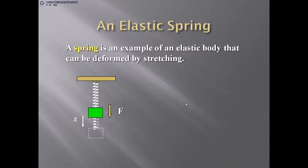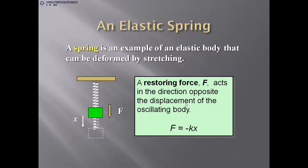A spring is an example of an elastic body that can be deformed by stretching. After the application of force F, its deformation is X. But if we remove the force, it will regain its original shape. A restoring force F acts in the direction opposite to the displacement, equal to minus KX, as the force develops opposite to the direction of deformation.